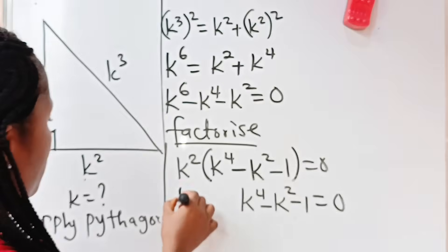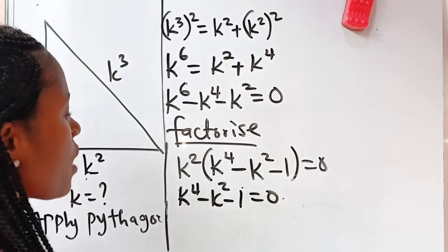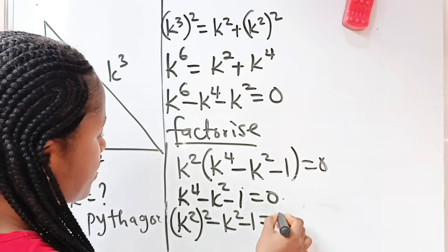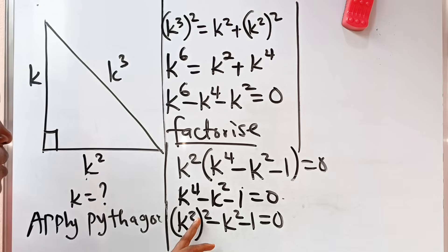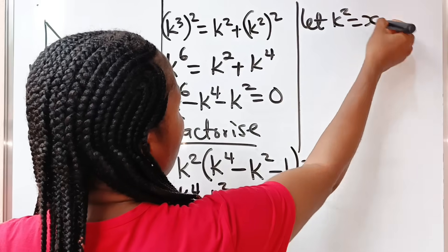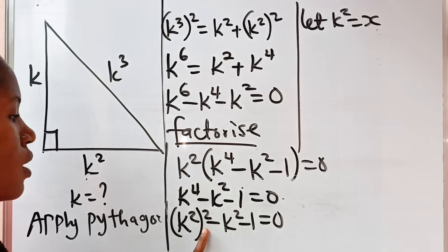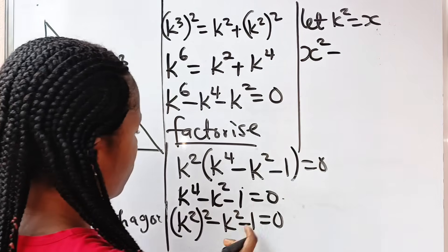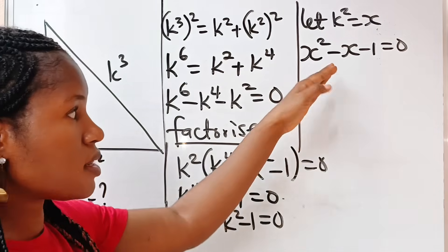Now if you look at K to the power of 4 minus K squared minus 1 equals 0 — K to the power of 4 is the same as K squared raised to the power of 2. Since we have K squared appearing twice, we can let K squared equal X, because we are trying to reduce this from a 4th degree equation to a quadratic equation. So we write this as X squared minus X minus 1 is equal to 0, and we can now solve this using the quadratic formula.